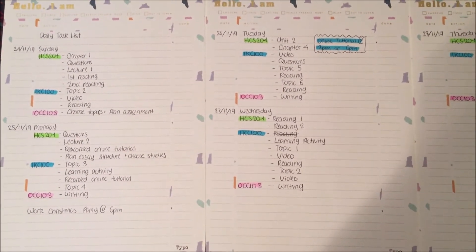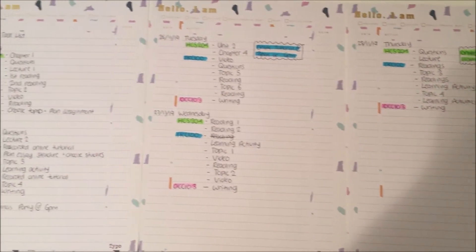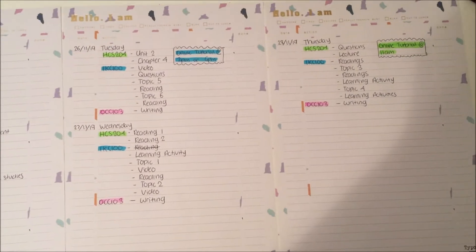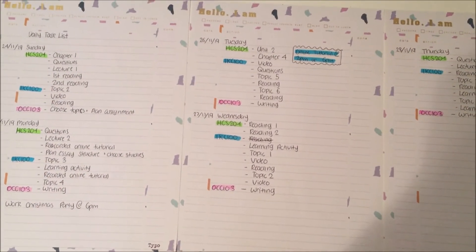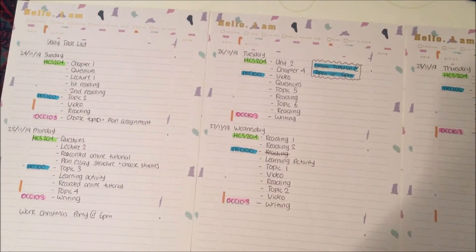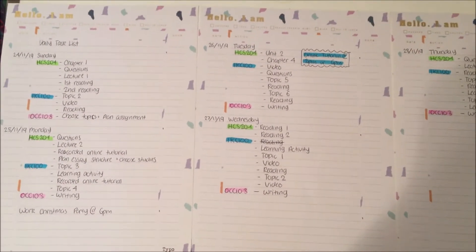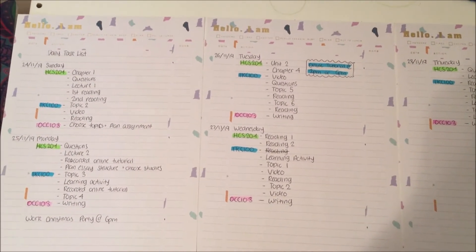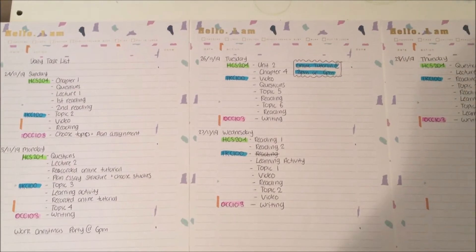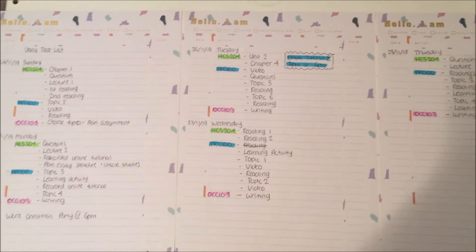I decided to put in nine tasks every single day over the next five days. I'm not too sure if it might be a bit too much for every single day, but I'll see how it goes. Some tasks will obviously take longer than others — the lectures are about an hour long, some of the videos are about 30 minutes long, and some of the readings are very long while others are really short.